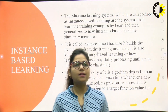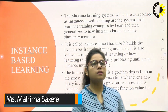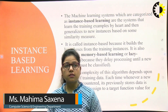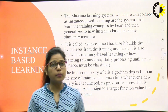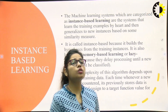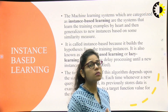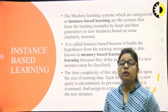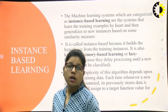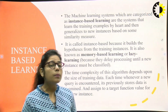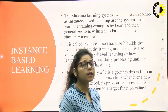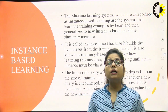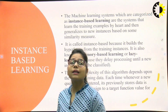What is instance-based learning? Machine learning systems categorized as instance-based learning are systems that learn the training examples by heart and then generalize to new instances based on some similarity measures. It is called instance-based because it builds the hypothesis from the training instances. It is also known as memory-based learning or lazy learners, and they delay pre-processing until a new instance must be classified.